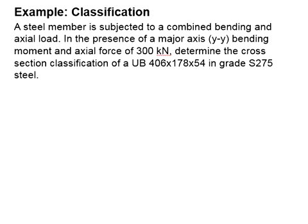Determine the section classifications if UB of 406 x 178 x 54 is provided. The grade of steel is S275.